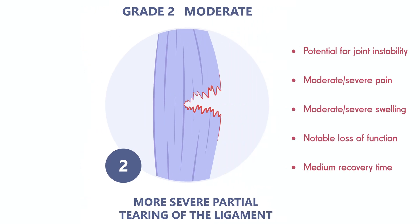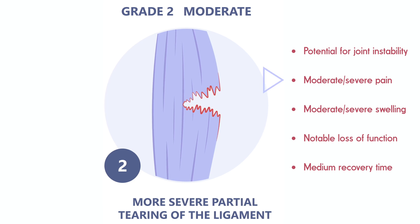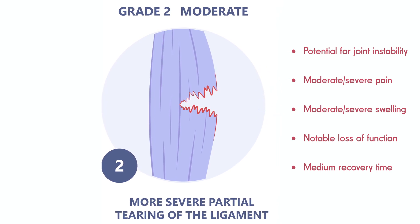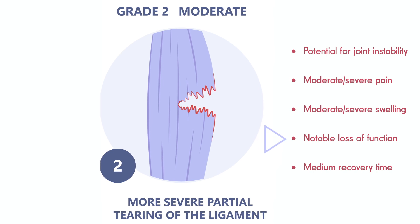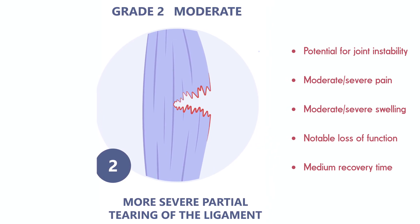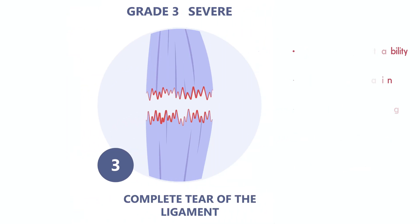Grade 2, or moderate ligament injuries, involve a partial tear of the ligament. The athlete will usually experience moderate pain, swelling, and tenderness at the injury site, along with some loss of function and potentially some joint instability. Finally, we have Grade 3 injuries — the most severe kind of ligament injuries.